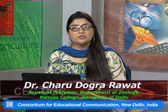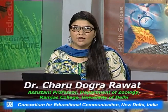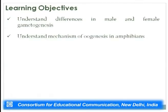Good afternoon everyone. Gametogenesis is the synthesis of gametes. In sexually dimorphic species there are two types of sexes — male and female — and therefore male and female gametes are produced. We have already talked about the formation of the male gamete, the sperm. Today we will precisely cover the synthesis of the female gamete, the ovum. The learning objectives are: to understand differences in male and female gametogenesis, to understand the mechanism of oogenesis in amphibians, and to understand oogenesis in insects.